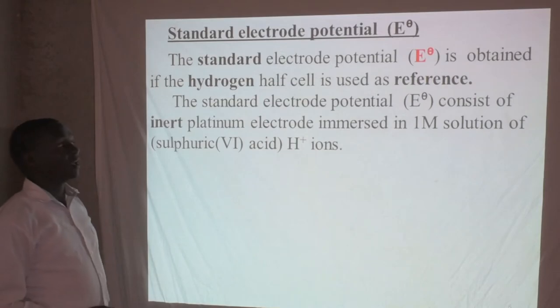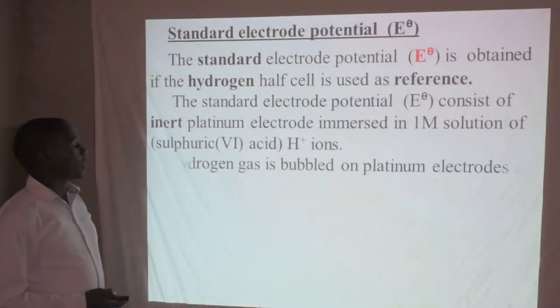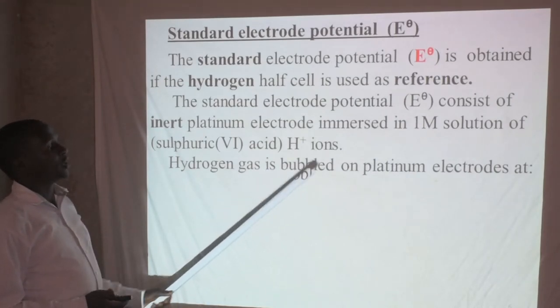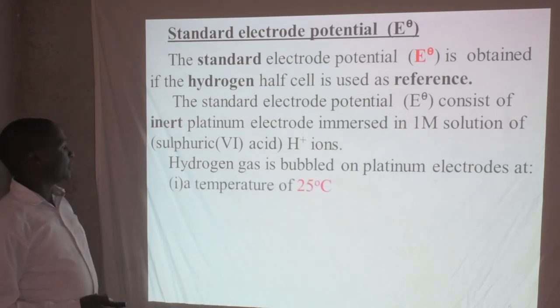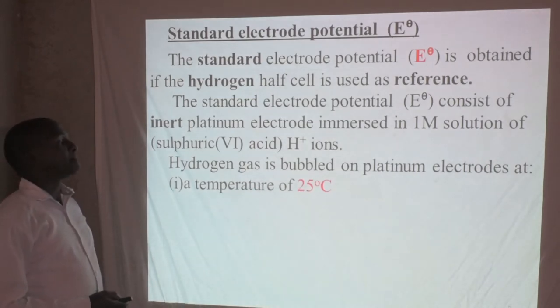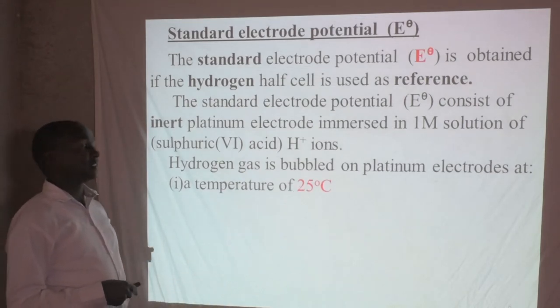The acid is identified by the hydrogen ions it has. The hydrogen gas is bubbled on the platinum electrode at a temperature of 25 degrees Celsius. That is the room temperature. So we have the hydrogen gas bubbled on the platinum electrode at a temperature of 25 degrees Celsius.